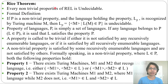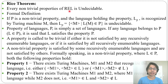Every non-trivial property of a recursively enumerable language is undecidable. These non-trivial properties include emptiness, finiteness, membership, regularity, context-freedom, context-sensitivity, and recursiveness — all non-trivial properties of Turing machines or recursively enumerable languages, which are undecidable.